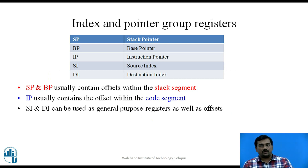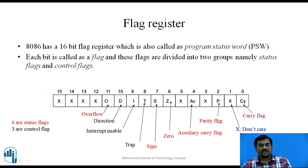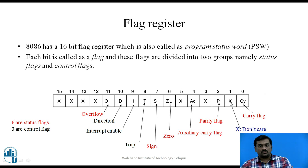The index and pointer group registers contain the offset. Stack Pointer and Base Pointer contain the offset for the Stack Segment. The Instruction Pointer contains the offset for the Code Segment. Source Index and Destination Index are general purpose registers and can also be used for storing the offset. The final register is the Flag Register. The 8086 has one 16-bit flag register. The flags include: Carry Flag, Parity Flag, Auxiliary Carry Flag, Zero Flag, Sign Flag, and Overflow Flag. The bits marked X are don't-care conditions. There are also three control flags: Direction Flag, Interrupt Enable Flag, and Trap Flag.